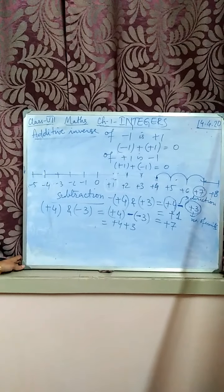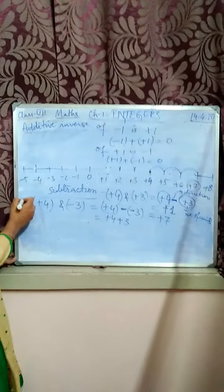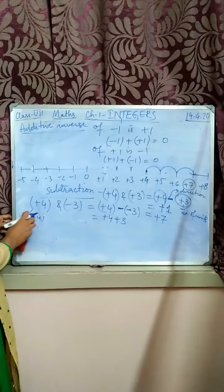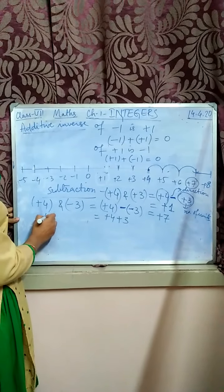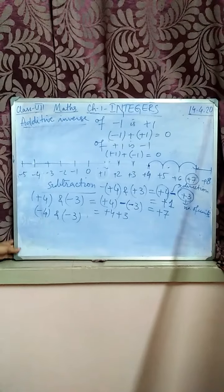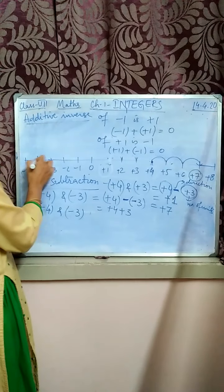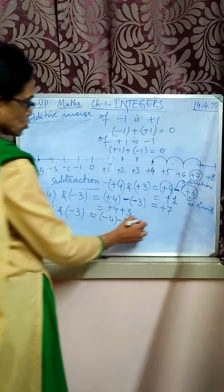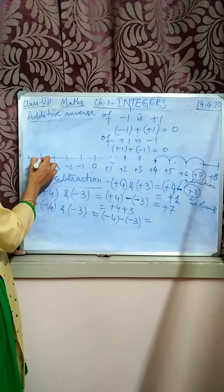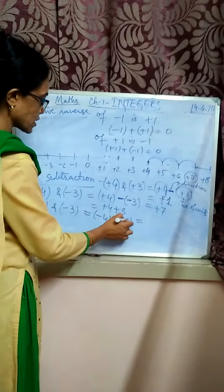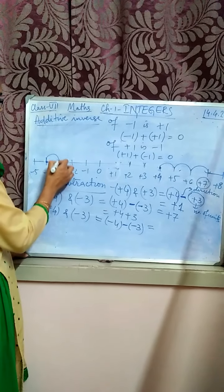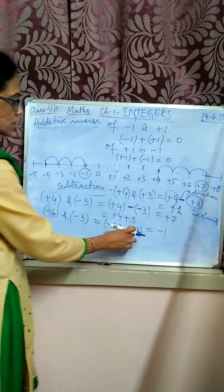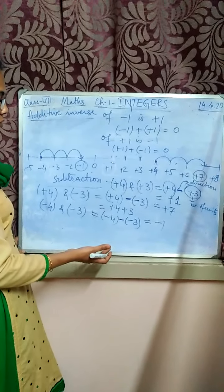Minus and minus becomes plus. Next, taking both numbers negative — minus 4 minus minus 3. Here is minus 4. Both negative signs together make plus, so you move 3 digits to the right. The answer is minus 1. Whenever there are two negative signs in subtraction, you will not move to the left but to the right.